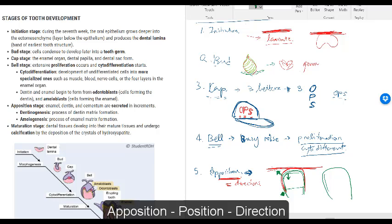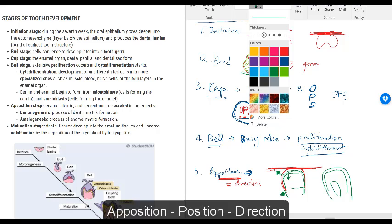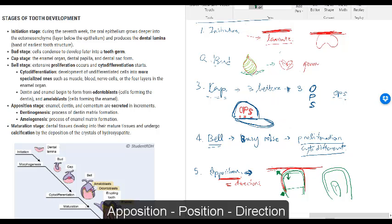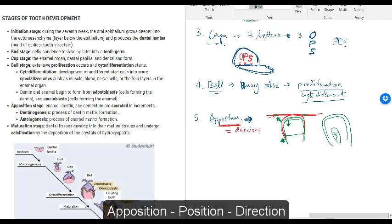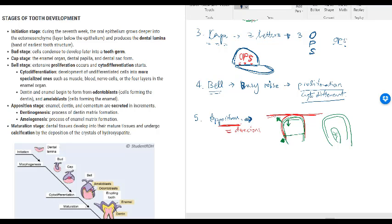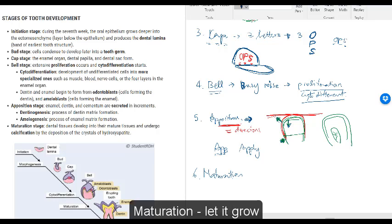So many different positions, many different directions that the cells are forming to really create this tooth structure with the enamel, the pulp, and the blood vessels inside and all that. I'm going to stop drawing. I think you understand the concept. Apposition means things are going in many different directions. If you feel like what I say about position and direction doesn't really make sense, why don't you just take the simple words 'app' like 'apply'? You're applying different layers in different directions. The last one is maturation, which is something rather simple. You just let it grow.